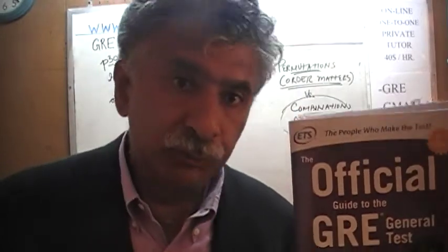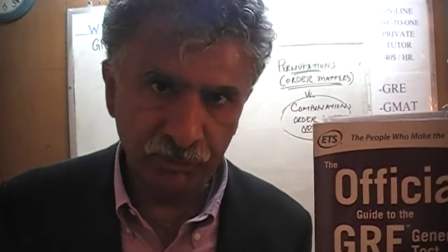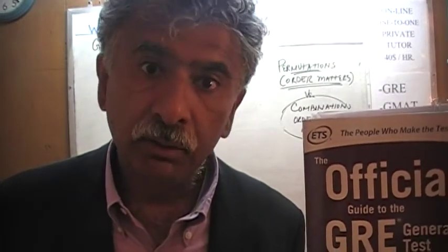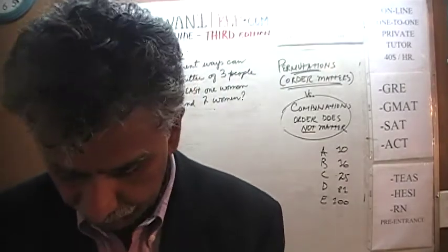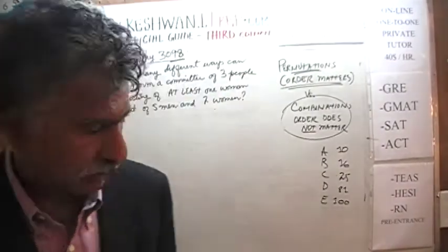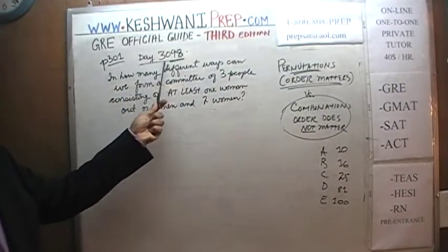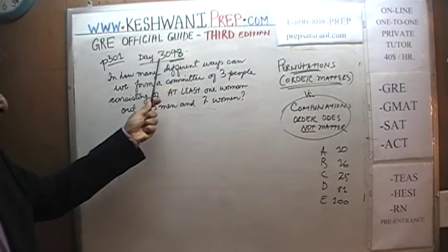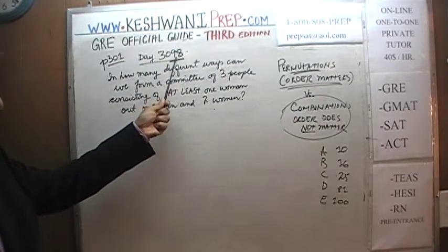The third edition. If you do not own this book already, purchase it immediately — you are going to need it. Today is our lesson number 98, day 3098. The 3 signifies that we are in the third edition, third edition day 98.